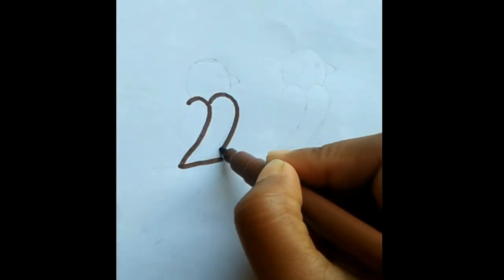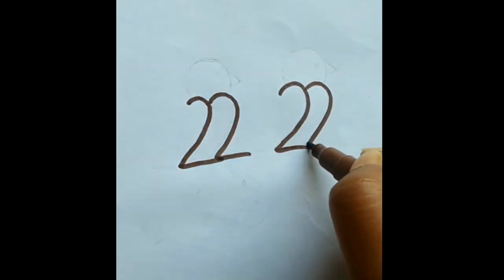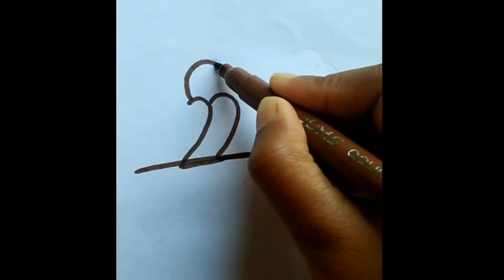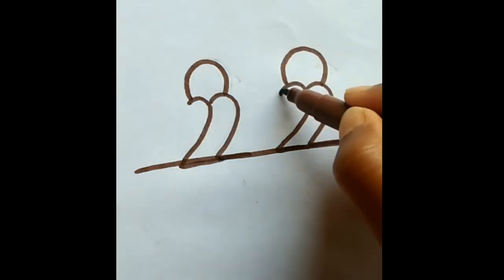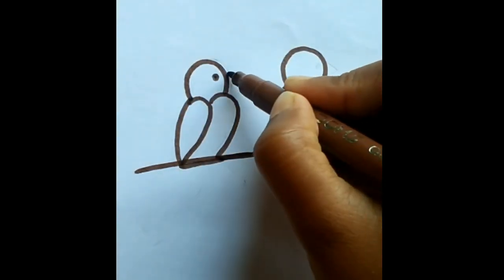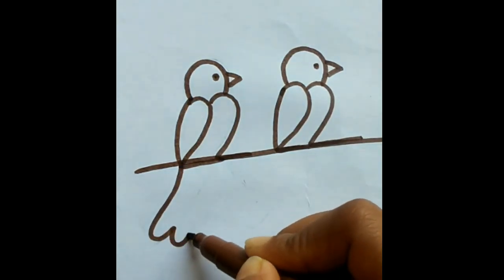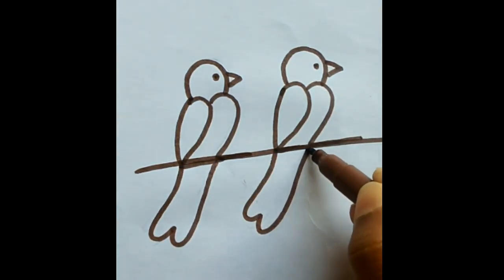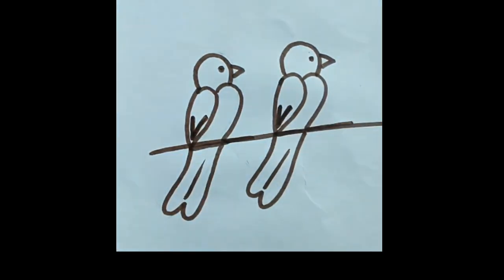Draw 4 2's. Draw a straight line. Draw a C on top of 2. 2 lines. Bean-like eyes and beak. 2 W's. 2 V's. The two birds on the branch are finished. You can try it.